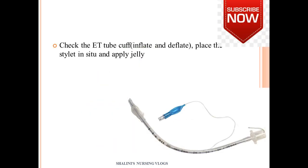Next, check the ET tube: inflate and deflate the cuff to detect any cuff leak, even with new catheters. Then place the stillet (guide wire) inside the endotracheal tube and apply lubricant jelly all over the tube.